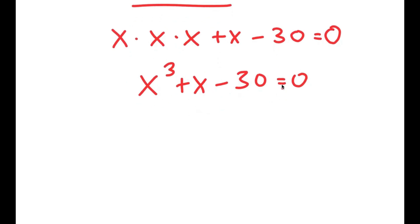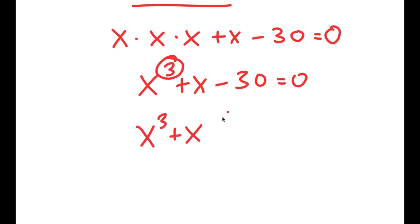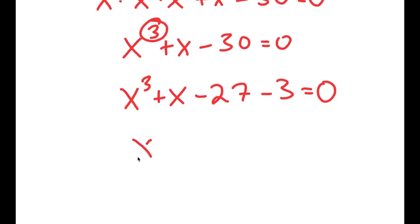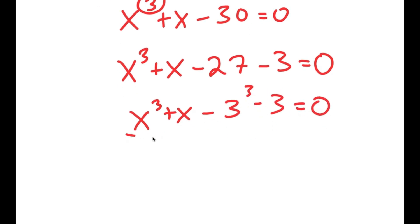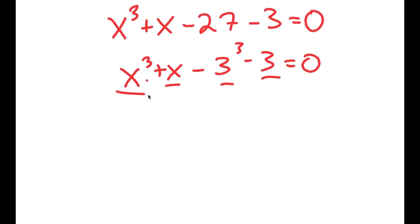A lot of people would think this is a quadratic equation, but this is a power of 3, not a power of 2, meaning we can't use the quadratic formula or the normal method of factoring. So to actually solve this, I'm going to rewrite negative 30 as negative 27 minus 3. The reason is that 27 is the same thing as 3 to the power of 3. Notice how we have something to the power of 3 plus that same number, and another something to the power of 3 minus that same number. So I'm going to group the two powers of 3 — x to the power of 3 minus 3 to the power of 3 — and group the powers of 1, so plus x minus 3.